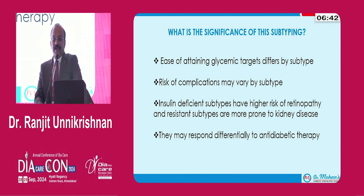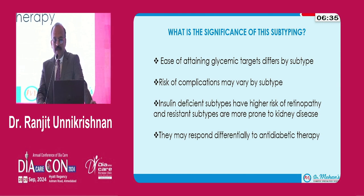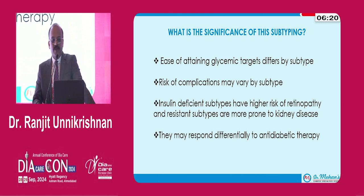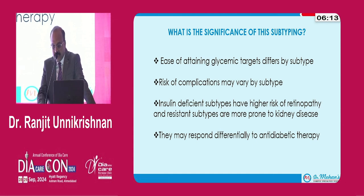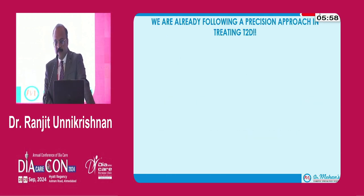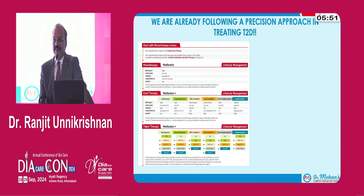What is the importance of this clustering? Ease of attaining glycemic targets varies by subtype — in general, insulin-deficient subtypes tend to reach glycemic goals with much more difficulty than insulin-resistant and mild subtypes. The risk of complications may also vary: deficient subtypes have a higher risk of retinopathy while resistant subtypes are more prone to kidney disease. There is also a possibility that patients respond differentially to anti-diabetic therapy, and with so many 12-13 classes of anti-diabetic agents, we may be able to find out which class works best in which patient.